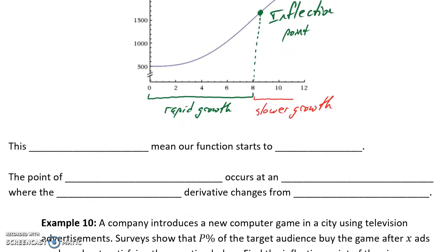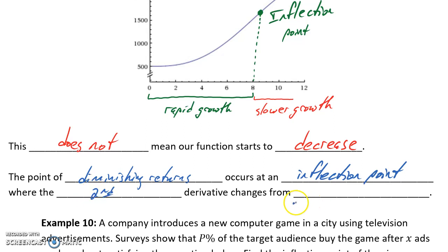So it's very important to keep in mind this idea, that the point of diminishing returns does not mean that our function starts to decrease. The point of diminishing returns occurs at an inflection point, where the second derivative changes from positive to negative.